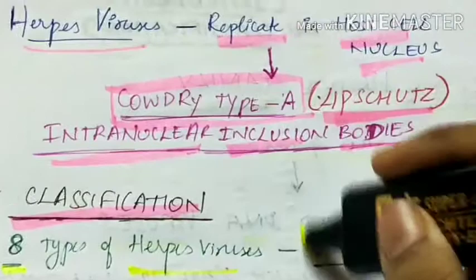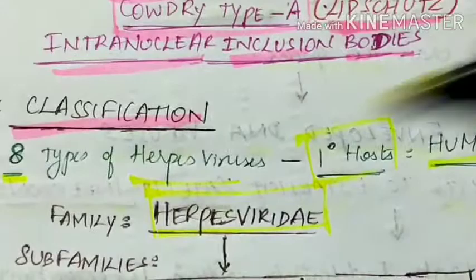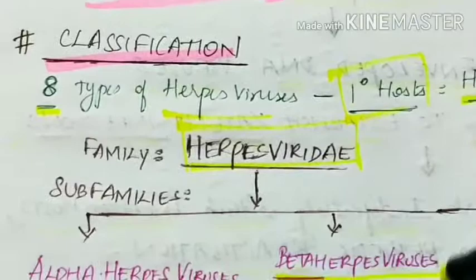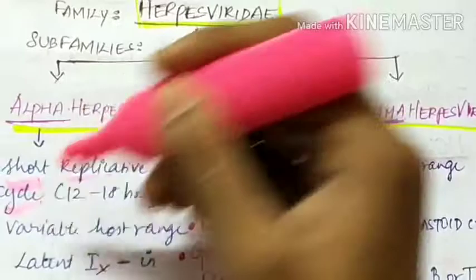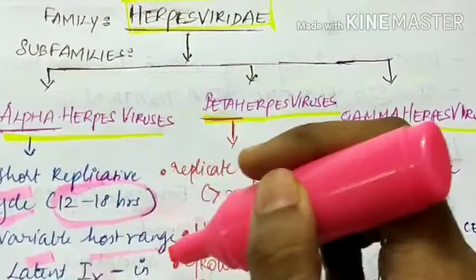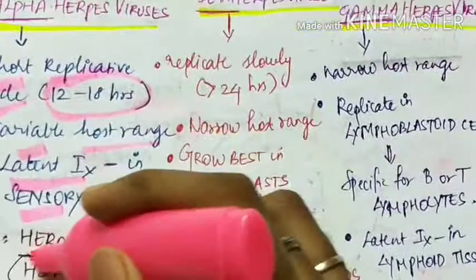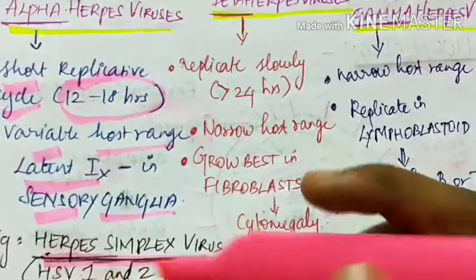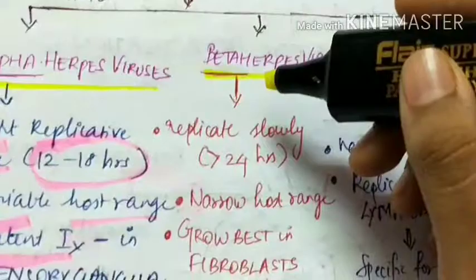There are 8 types of herpes viruses for which the primary hosts are humans. The family herpes viridae is classified into 3 subfamilies: alpha, beta, and gamma herpes viruses. Alpha herpes viruses have a short replicative cycle of 12 to 18 hours, a variable host range, and cause latent infection in sensory ganglia. Examples include herpes simplex virus 1 and 2, and varicella zoster virus, which causes chickenpox, also known as human herpes virus 3.